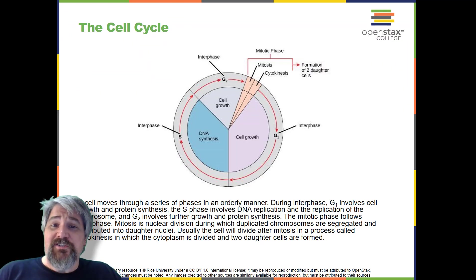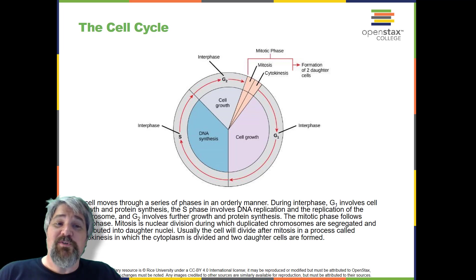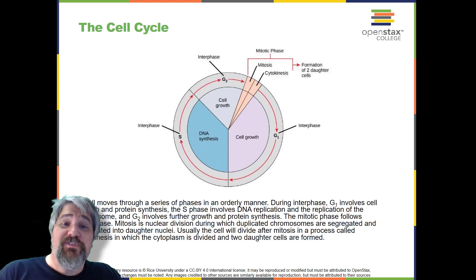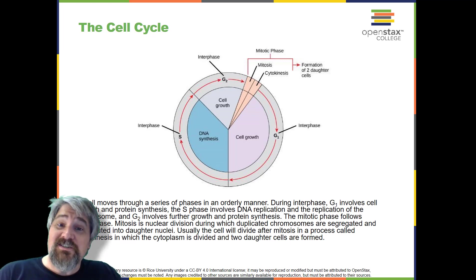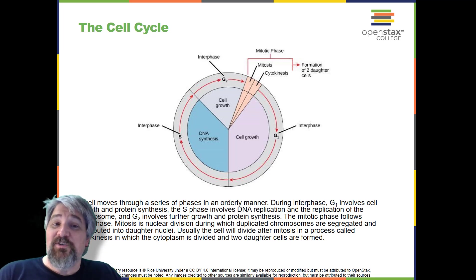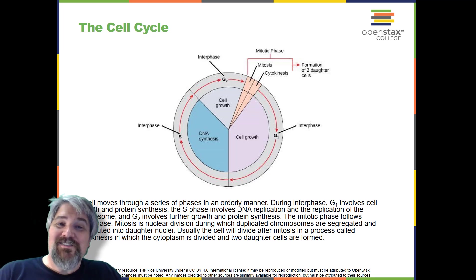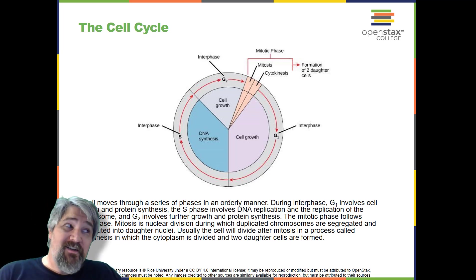The cell cycle is an ordered series of events involving cell growth and cell division that produces two new daughter cells. Cells on the path to cell division proceed through a series of precisely timed and carefully regulated stages of growth, DNA replication, and division that produce two genetically identical cells. The cell cycle has two major phases: interphase and the mitotic phase.